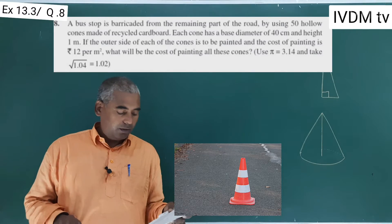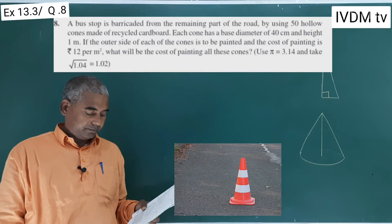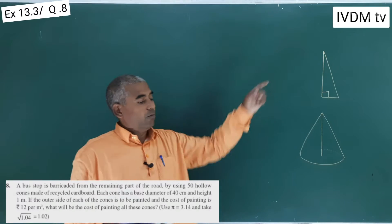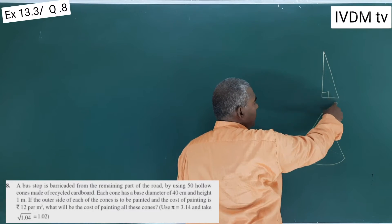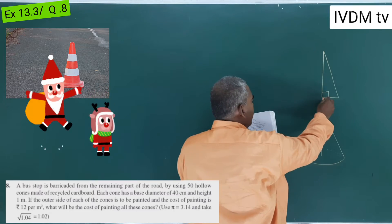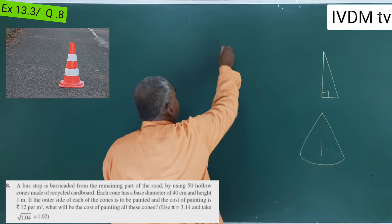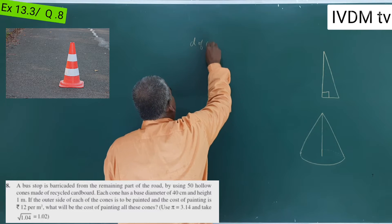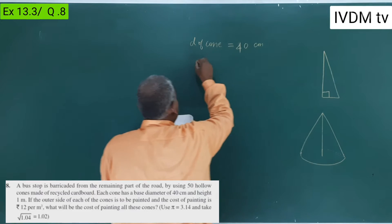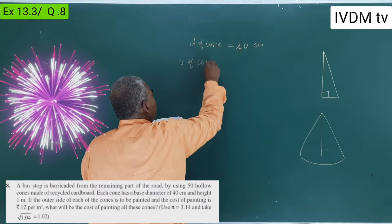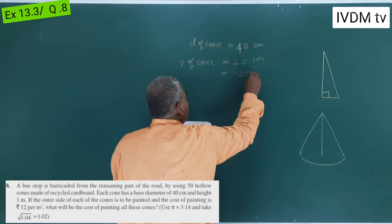Use π = 3.14, and the value of √1.04 = 1.02. Now, a cone is formed from a right circular triangle. The diameter given is 40 cm, so the radius of the cone is 20 cm, or 0.20 m.